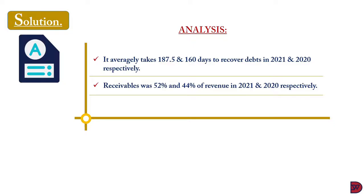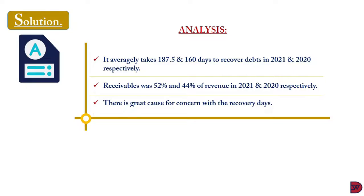The proportion of receivables has increased in 2021, which accounts for why the collection days have worsened. There is a serious concern here: if a business is already taking on average 160 days and has worsened to 187 days to retrieve its debt, there is a serious problem that needs to be addressed because bad debt is likely to arise, which can lead to insolvency.